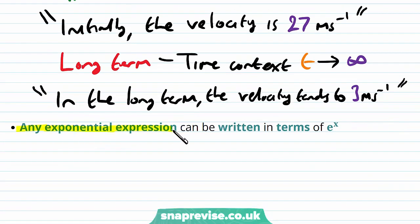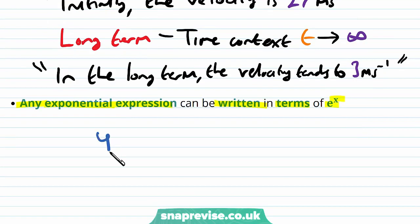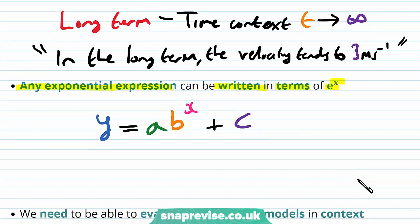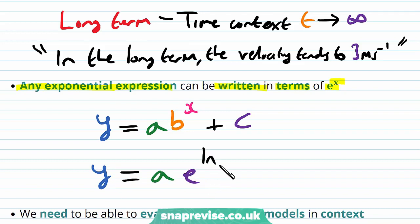Now any exponential expression can be written in terms of e to the x. Let's say we have y equals a times b to the power of x plus a constant c — this is a general exponential model. Then we can write this as y equals a multiplied by e to the power of the natural logarithm of b, all still in the power multiplied by x, plus c. All we have done is write b as e to the power of ln of b.